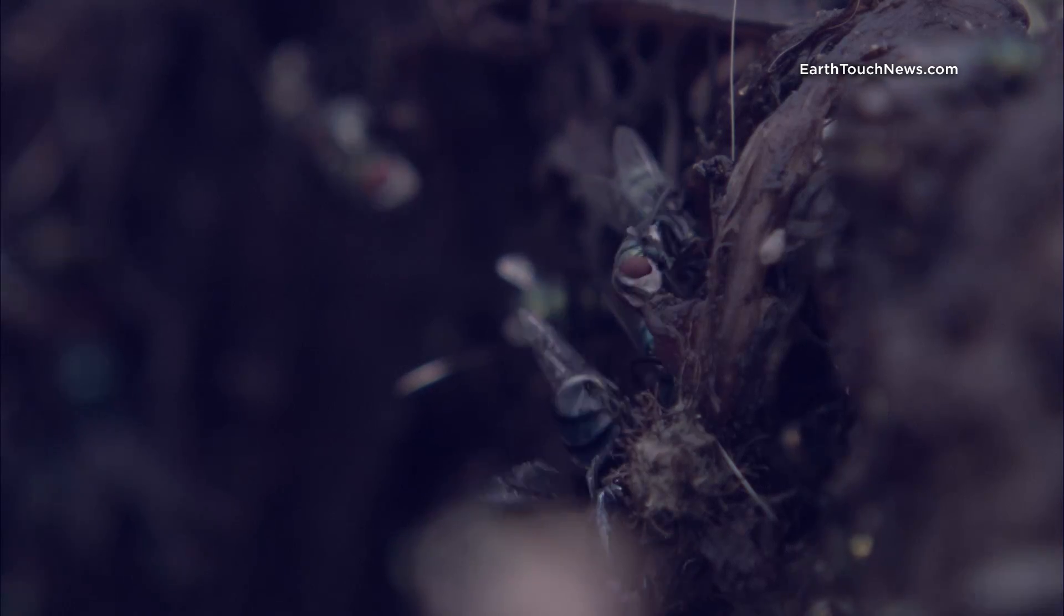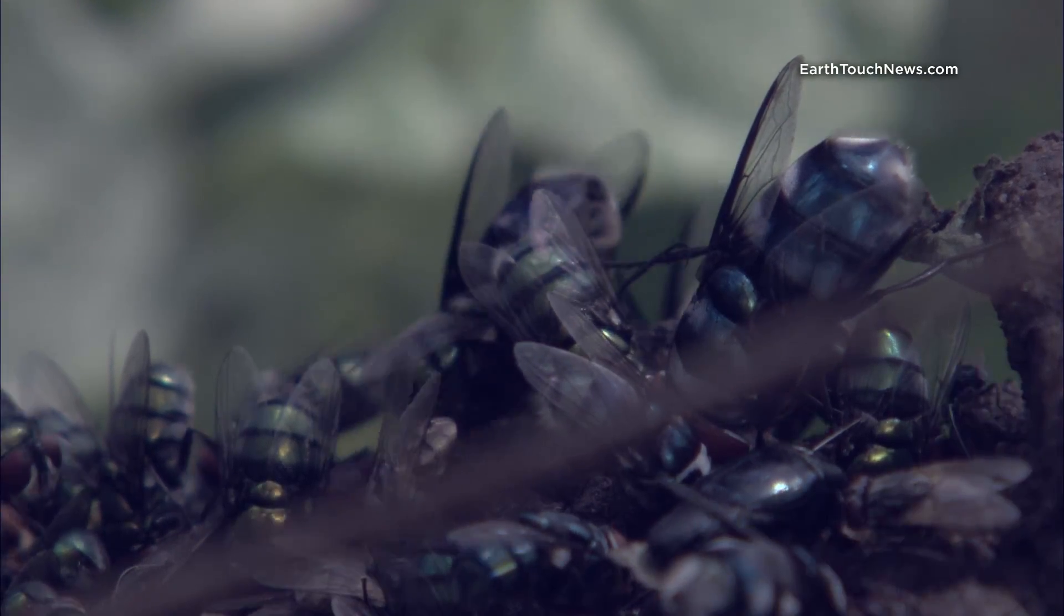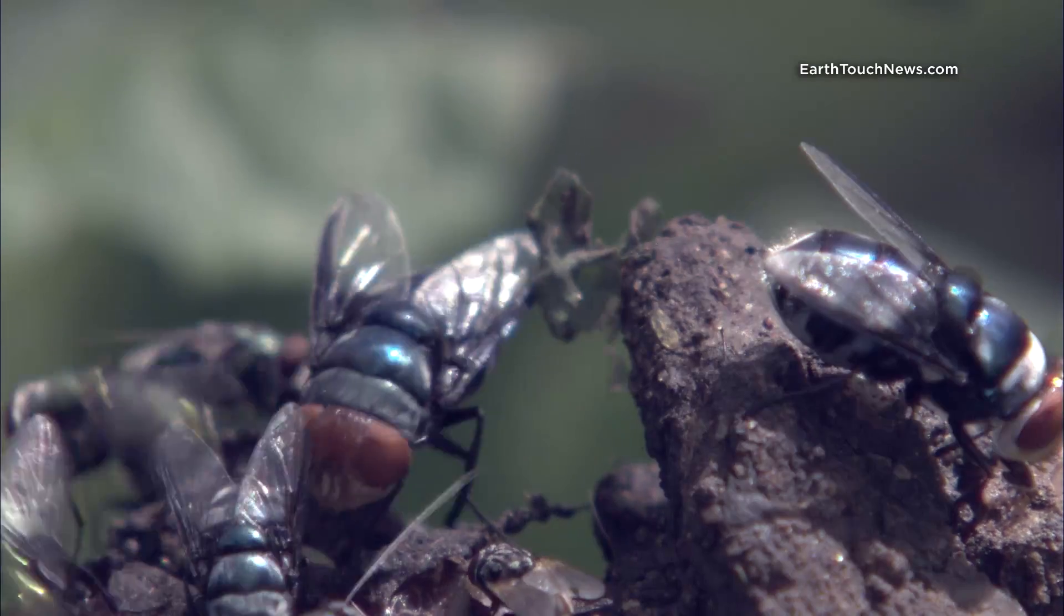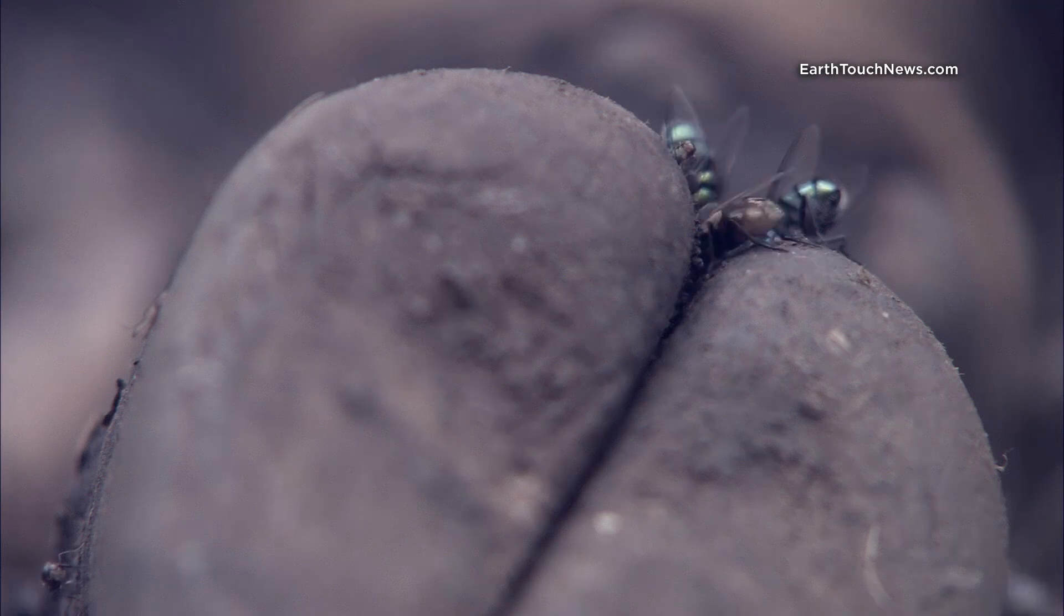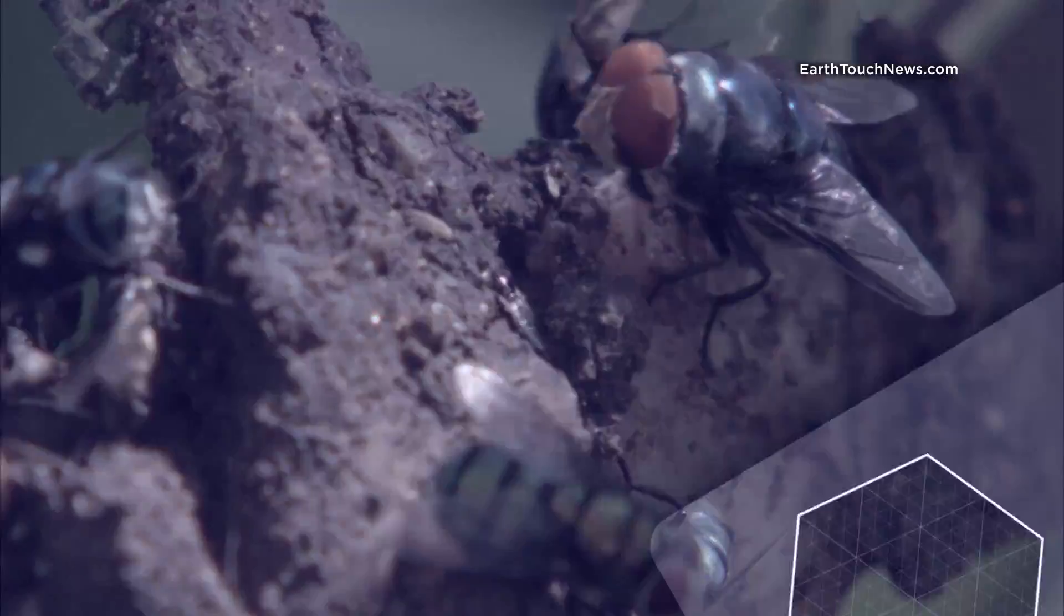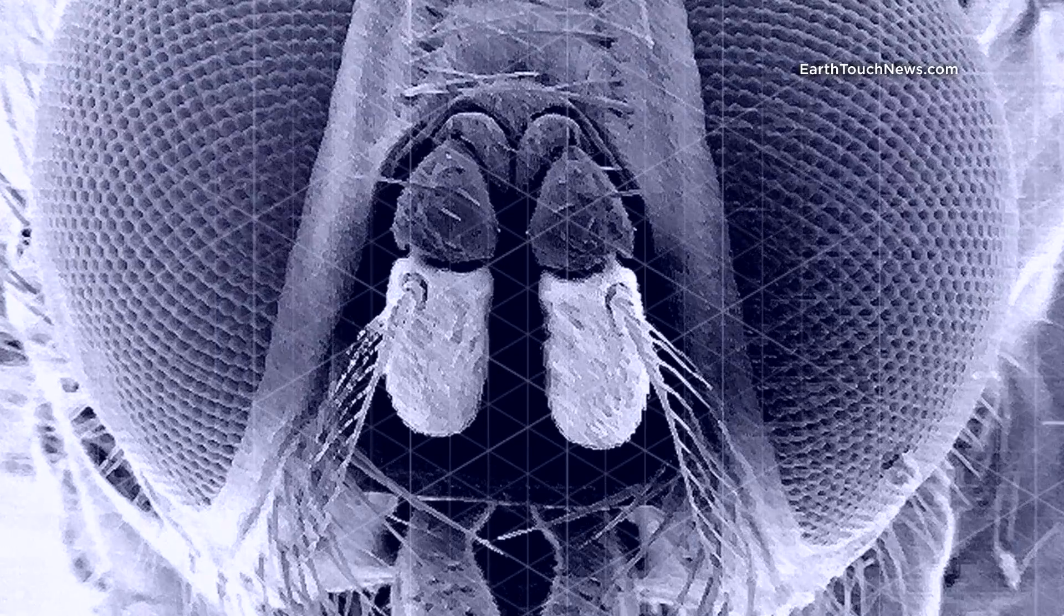Flies can sense death in an instant. Bodies are barely cold and they're the first to arrive at the scene. Corpses give off a smell, at first not strong enough for humans to detect, but these monstrosities have super sensitive hair-like structures on their antennae which pick up chemical signals that their nerve cells decode.